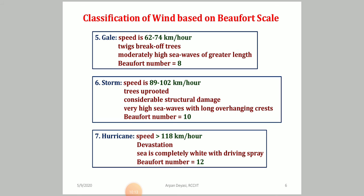Beaufort number 8 is called a gale, with a speed of 62 to 74 kilometers per hour. At this level, twigs break off trees and fall on the road, and moderately high sea waves of greater length form as the sea approaches the solid land. Gale is a scientific term used by geography and renewable energy professionals.